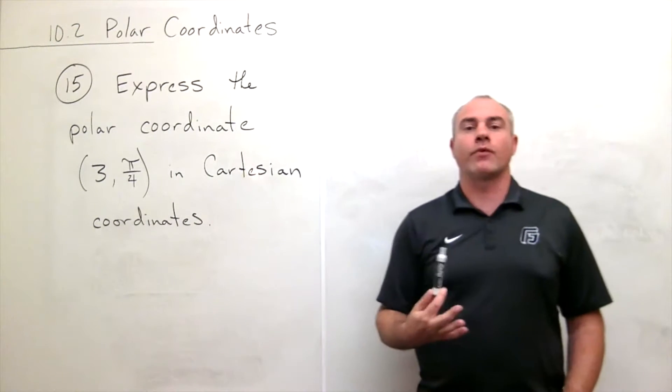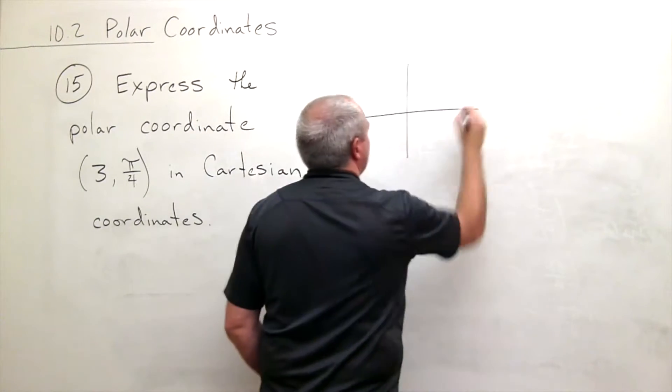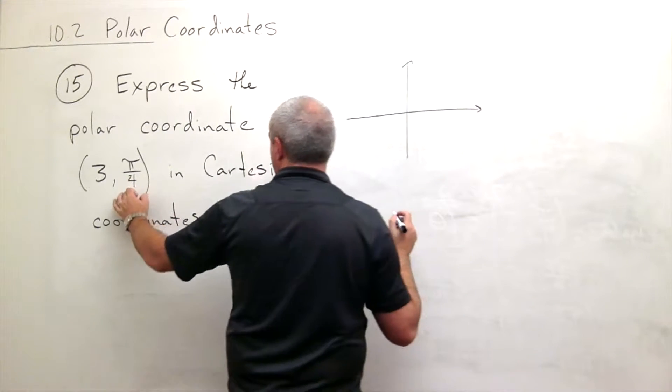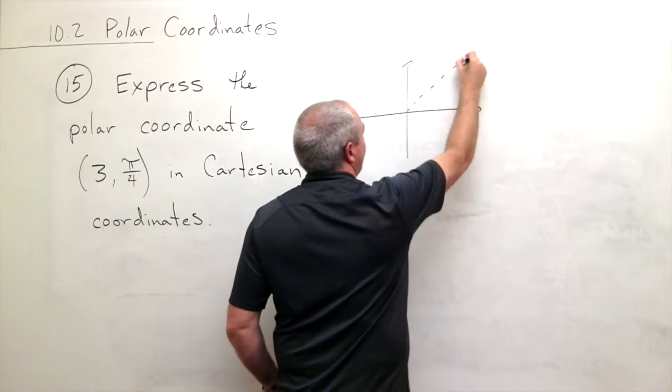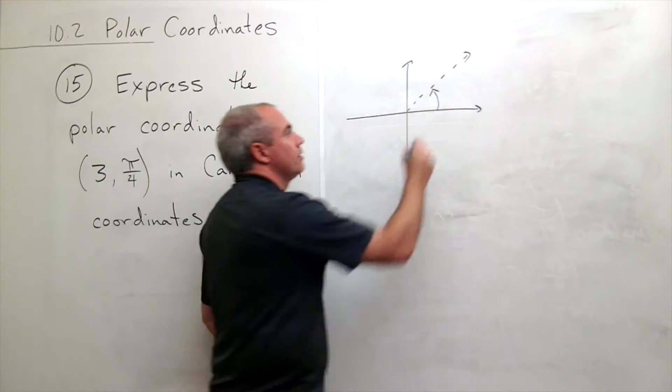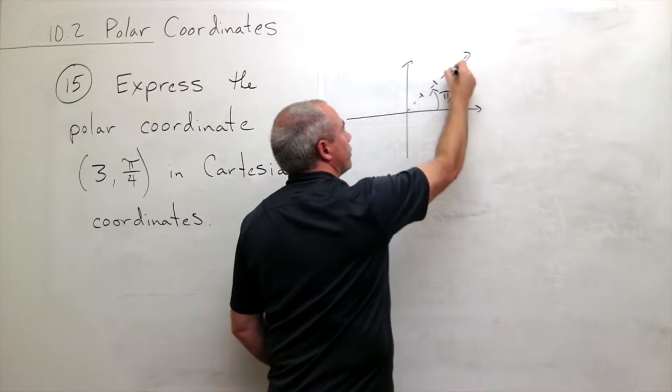Now first of all, just to get a feel for what we're doing here, let's take a quick look at what this would look like in the xy plane. Here's my x-axis, here's my y-axis. My angle is π/4, so that's my angle off of the x-axis, and then I go out three units, one two three.